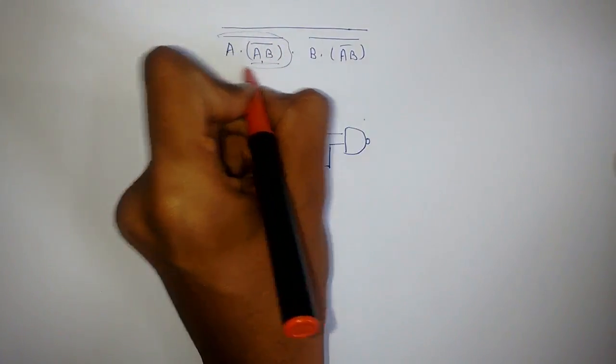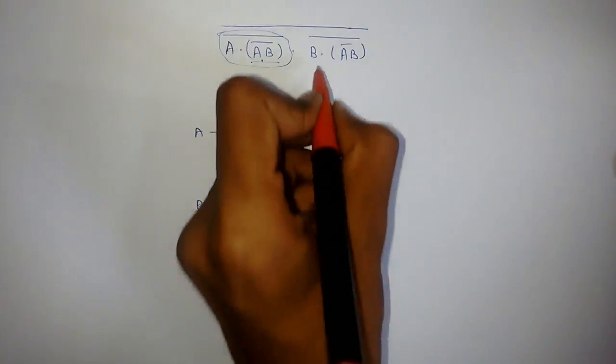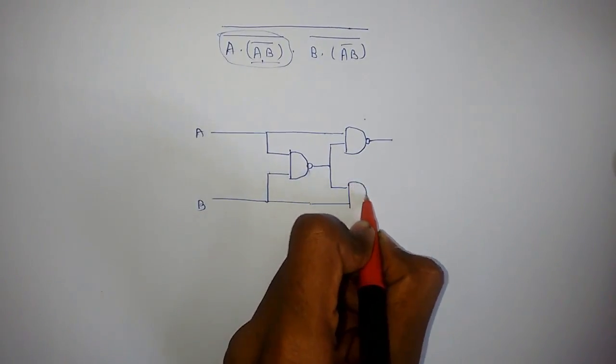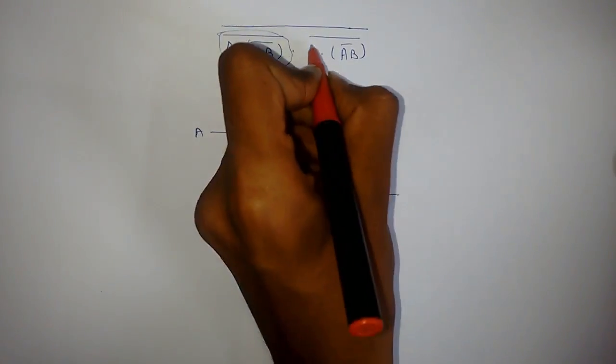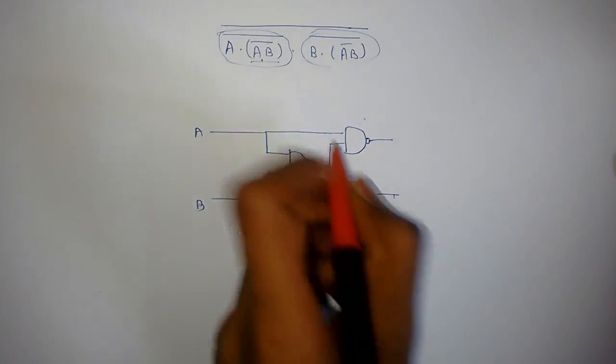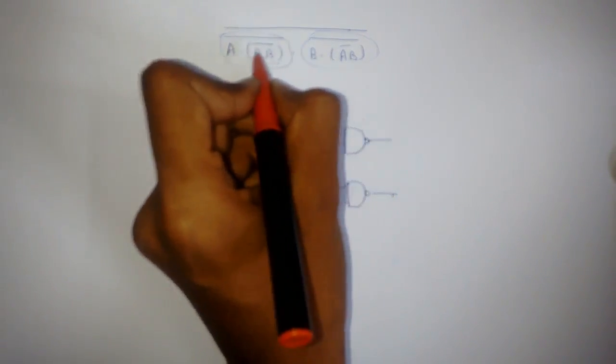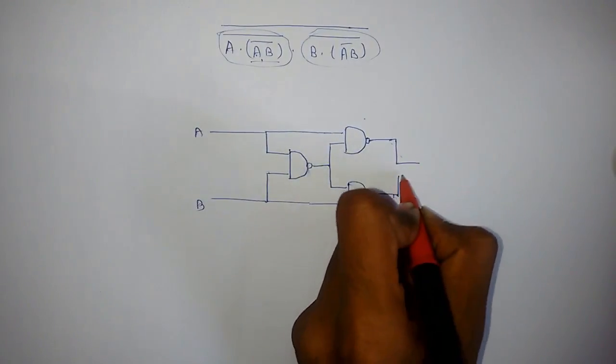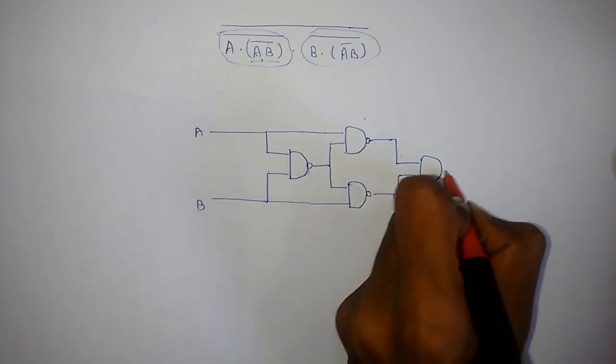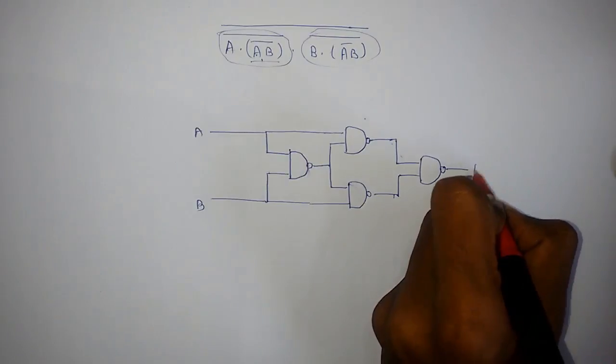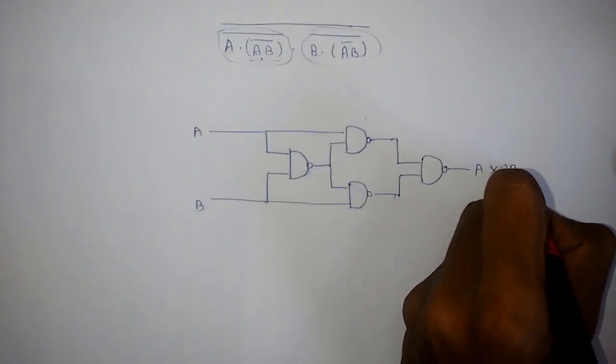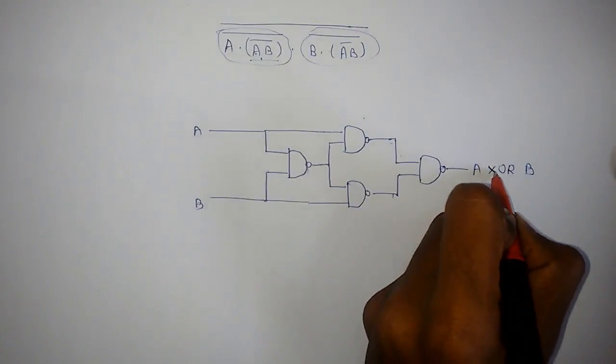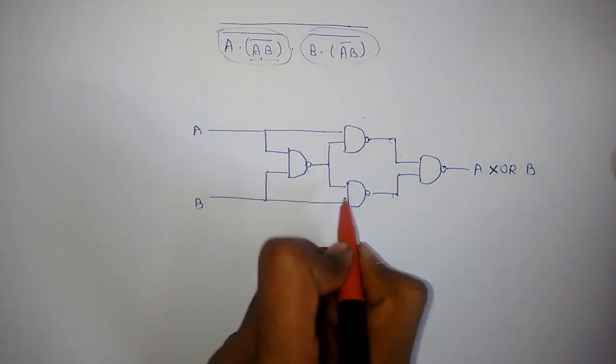So this is B and the same signal. This is obtained here and we will make NAND gate of this and this. So this is A XOR B. We have created XOR gate using only four NAND gates.